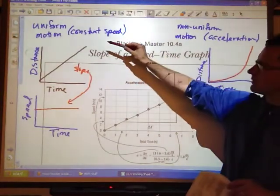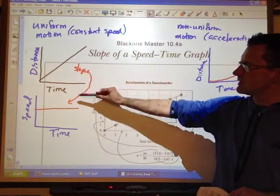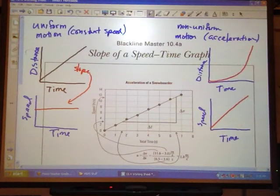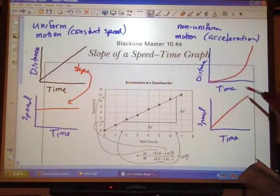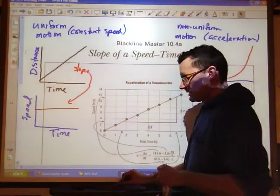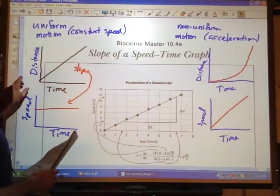So if you're going at a constant speed, a straight line graph for distance-time giving a constant speed. If it's acceleration, it's a curve distance-time graph given an increasing speed-time graph. So that's kind of a review of what we looked at earlier.